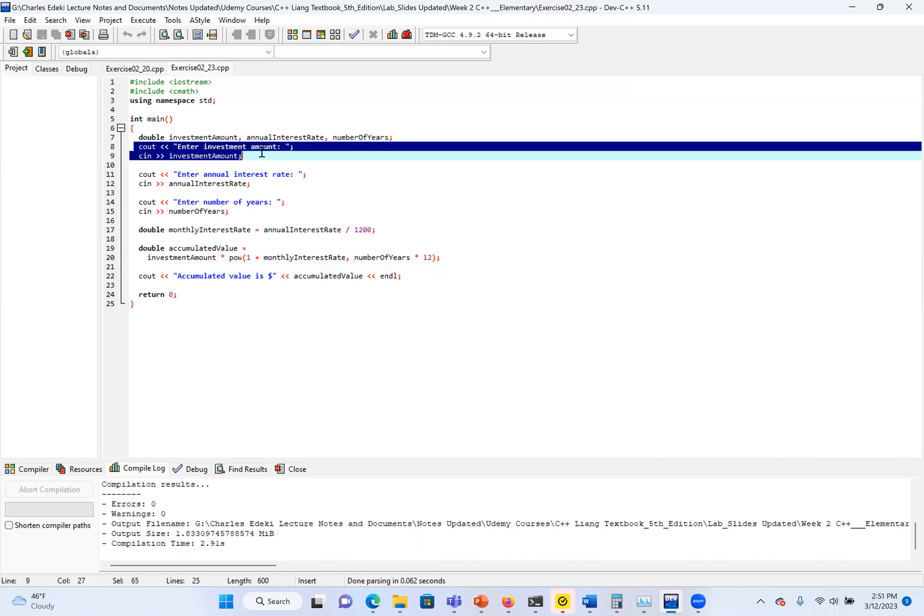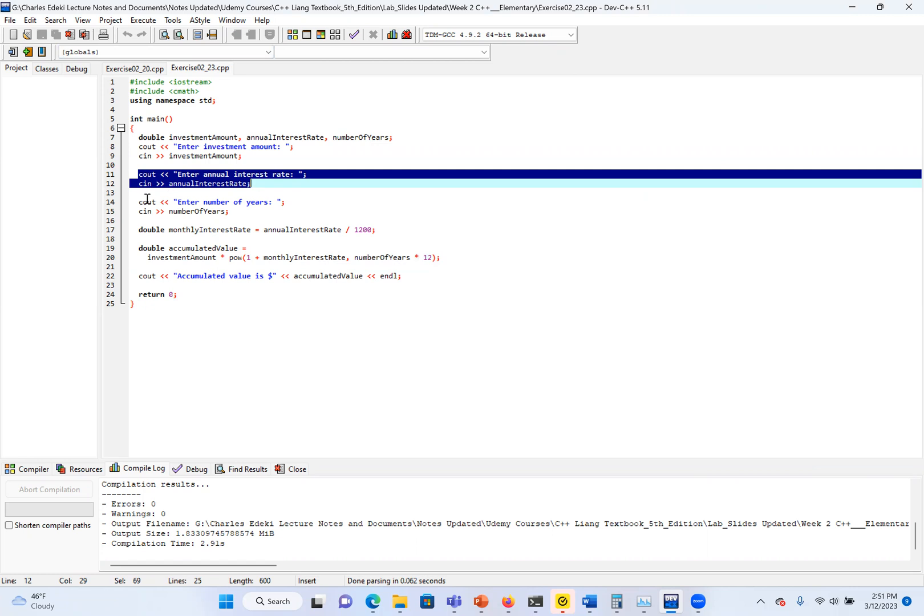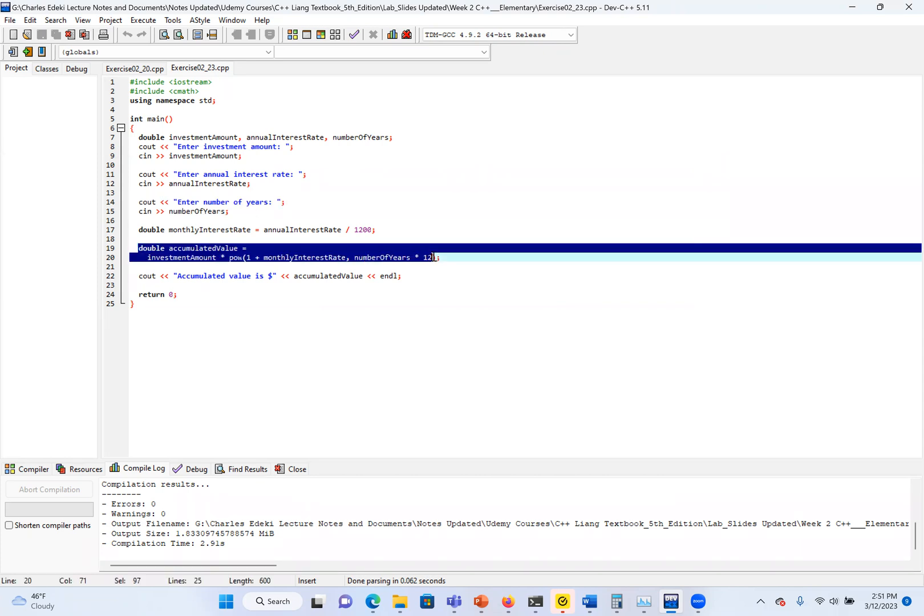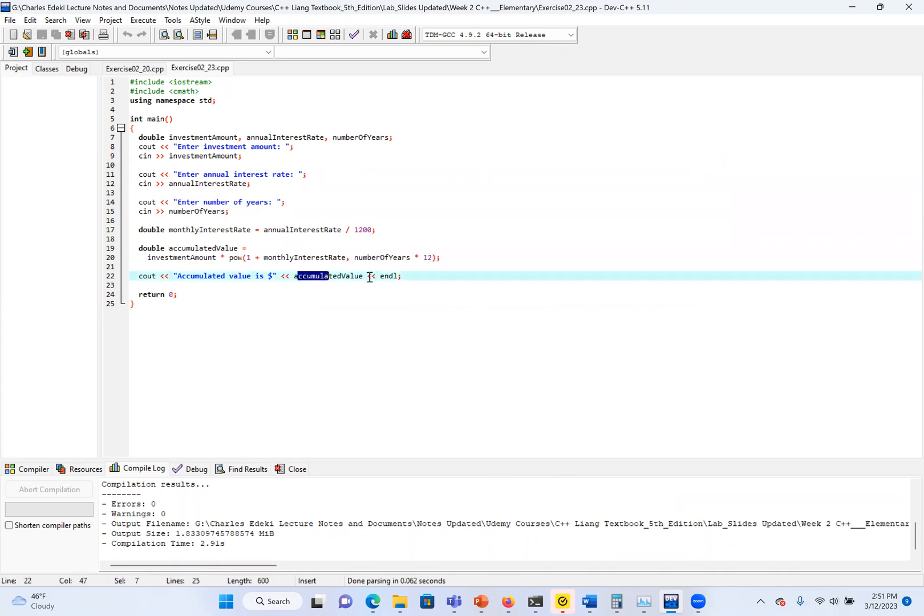First, we have our inputs: the investment amount, the annual interest rate, and the number of years. First, we find the monthly interest rate, which is annual interest rate divided by 1200. The reason it's 1200 is because monthly is divided by 12, and the value is in percentage, so we divide by 100 to change it to a decimal number. Then we apply the formula here. Then we print our results.